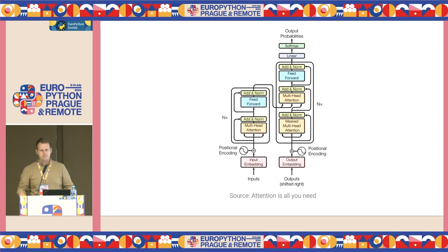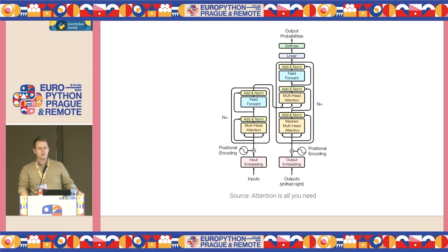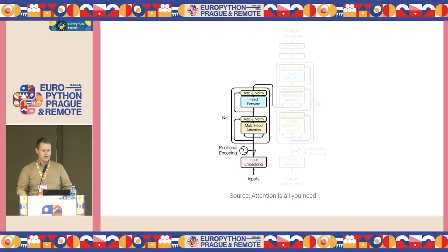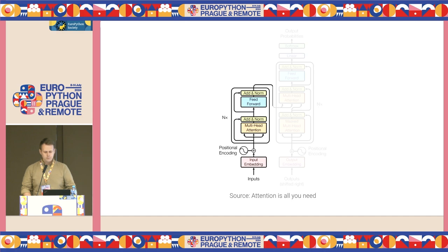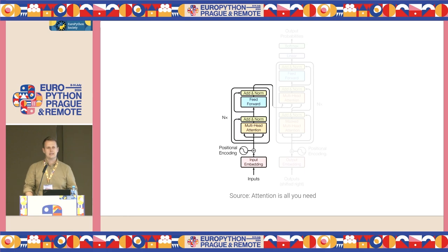The majority of embedding models — in fact all of the ones we use nowadays — are based on the transformer model. This diagram comes from the 'Attention Is All You Need' paper and presents a general overview of the transformer architecture. In the case of embedding models, we don't care much about the right-hand side because embedding models are usually encoder-only architectures. They do not predict the next token in a sequence as LLMs do; they just take input and produce vectors with useful similarity properties.